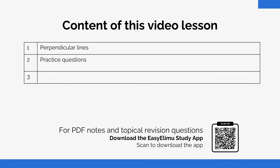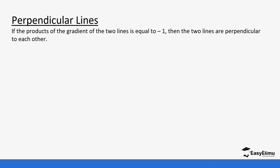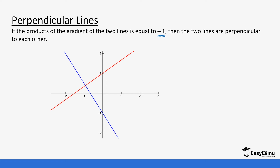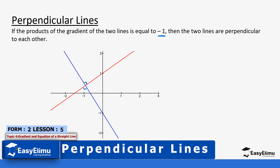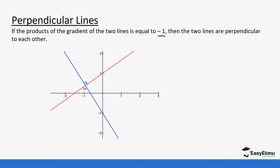We are going to see what perpendicular lines are and how we are able to identify that certain lines are perpendicular in nature. Perpendicular lines are lines whose gradients, when multiplied together, give a result equal to negative one. You can see that the lines shown below are perpendicular — they form an angle of 90 degrees with each other.